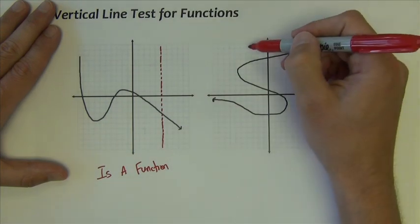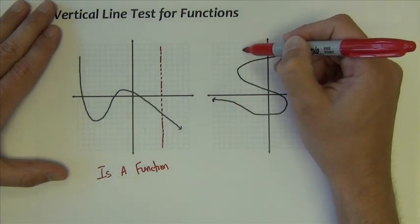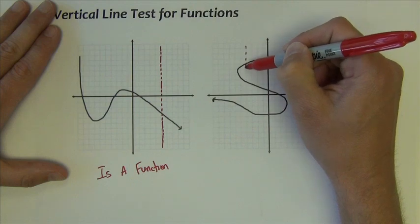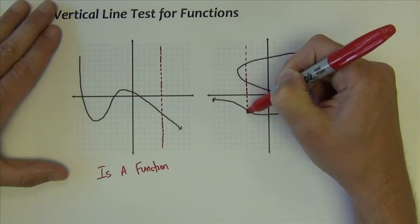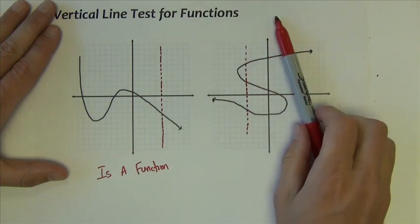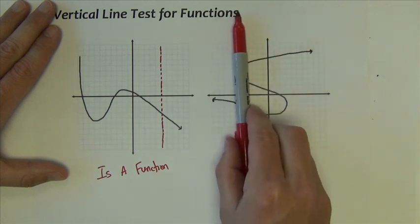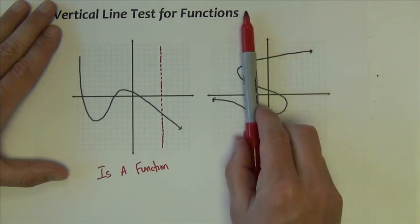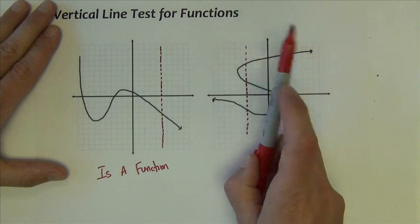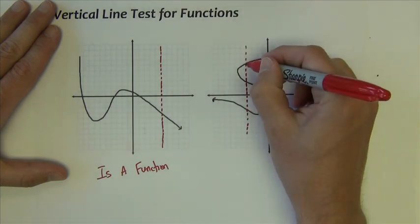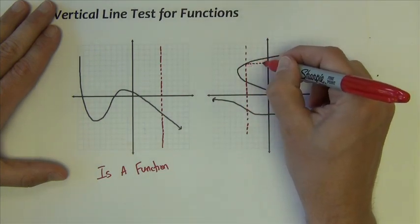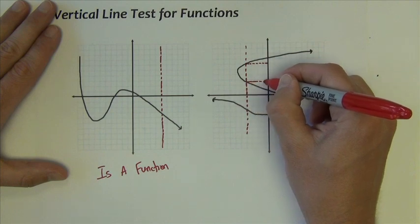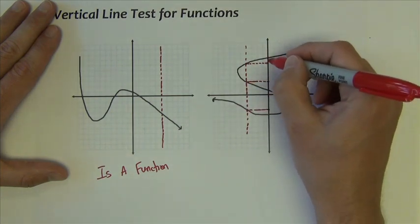On the other hand, if I were to take a vertical line over here and sweep it through left and right, we can see there are a lot of places on this particular graph where the vertical line hits the graph more than once.